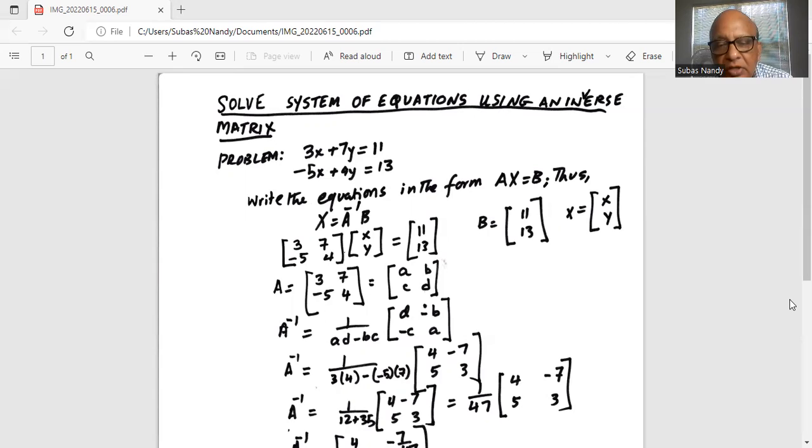The transformed matrix has 4 for D in the first position. B, which was 7, becomes minus 7. The original C was minus 5,